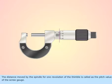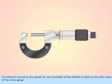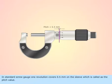The distance moved by the spindle for one revolution of the thimble is called the pitch value of the screw gauge. In standard screw gauge, one revolution covers 0.5 mm on the sleeve which is called the pitch value.